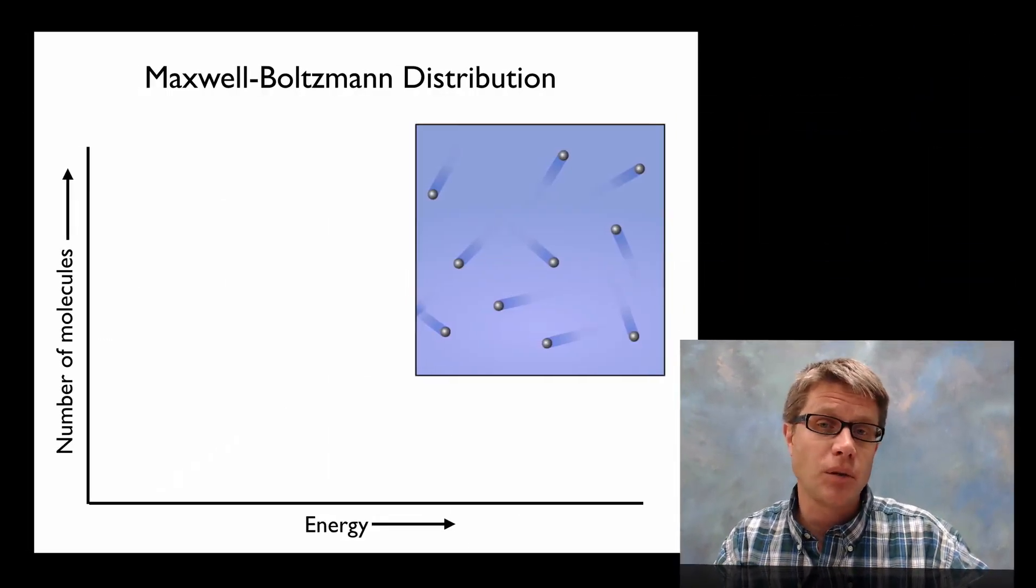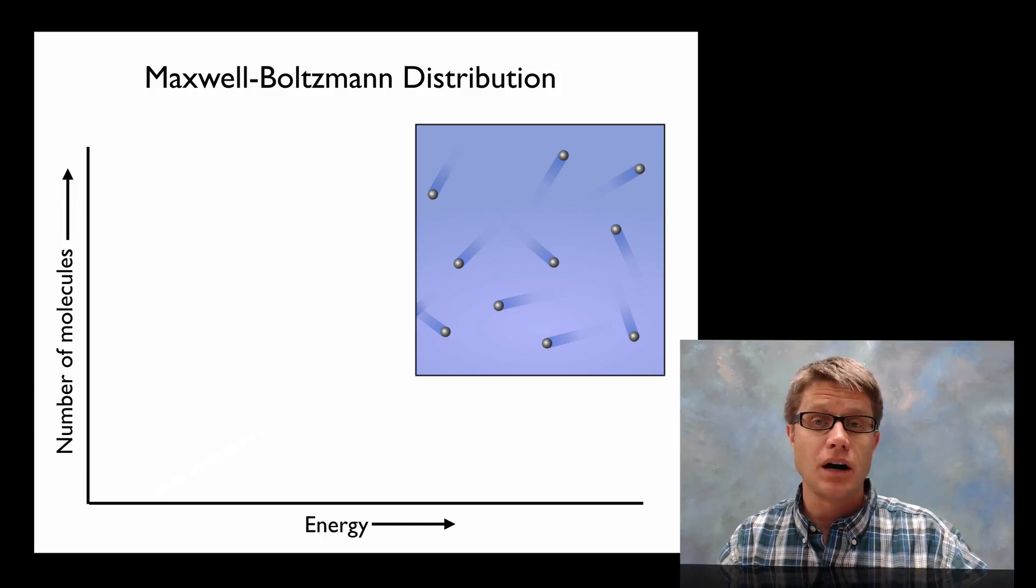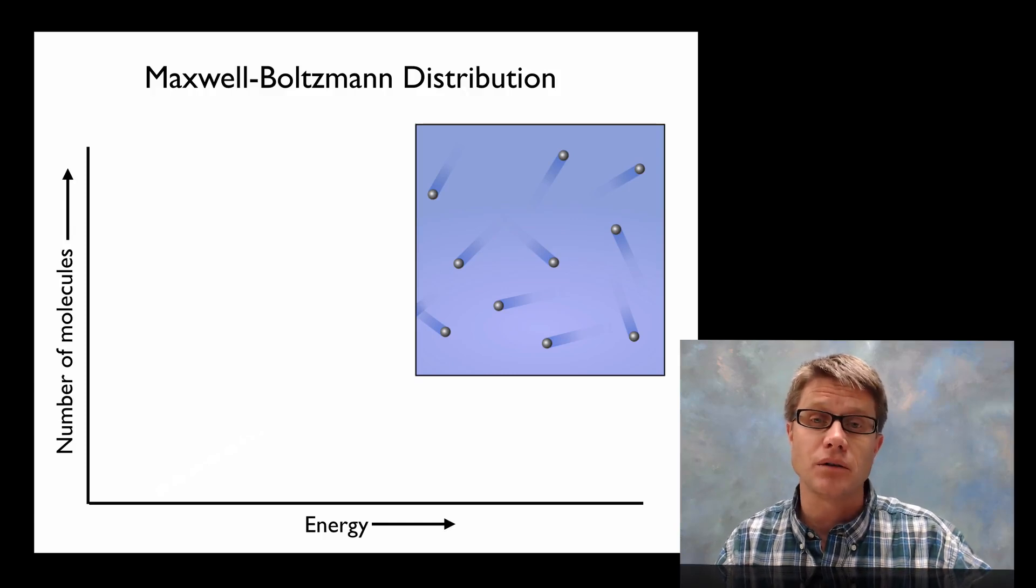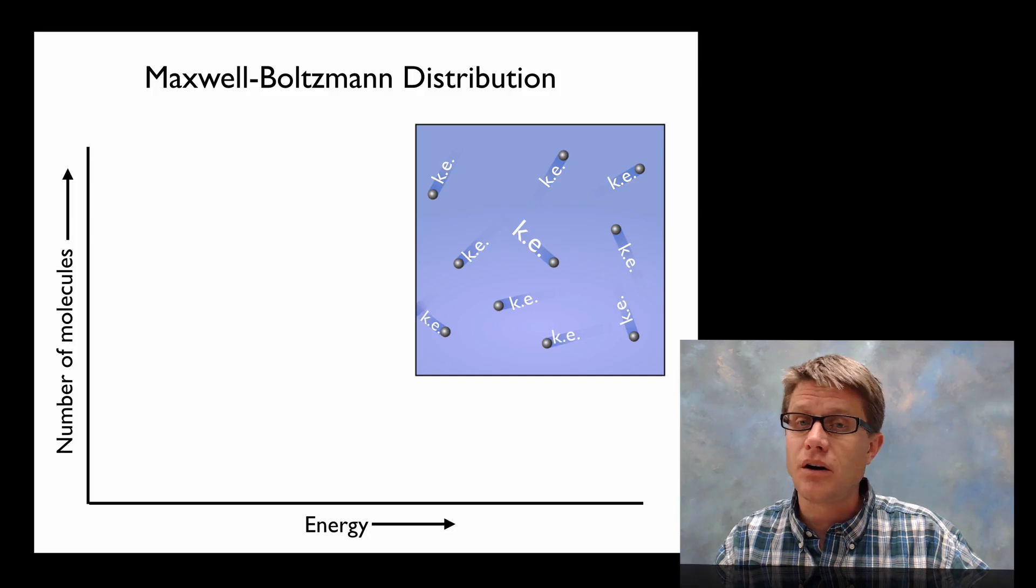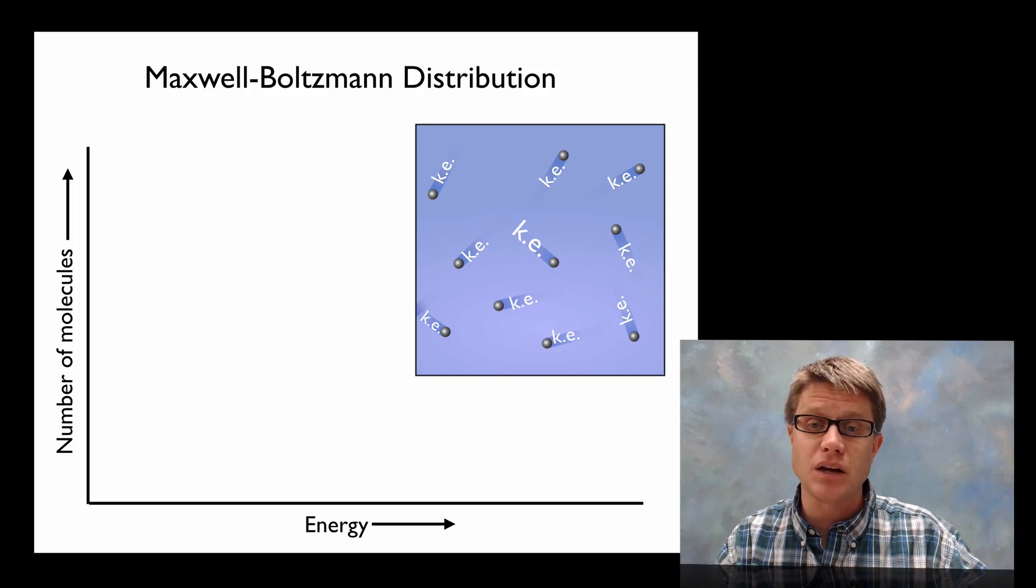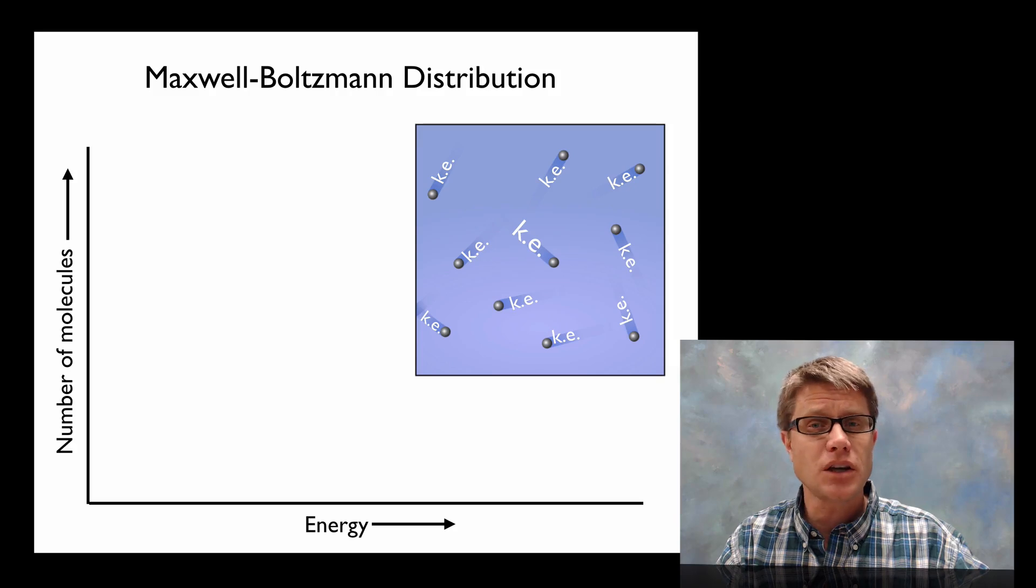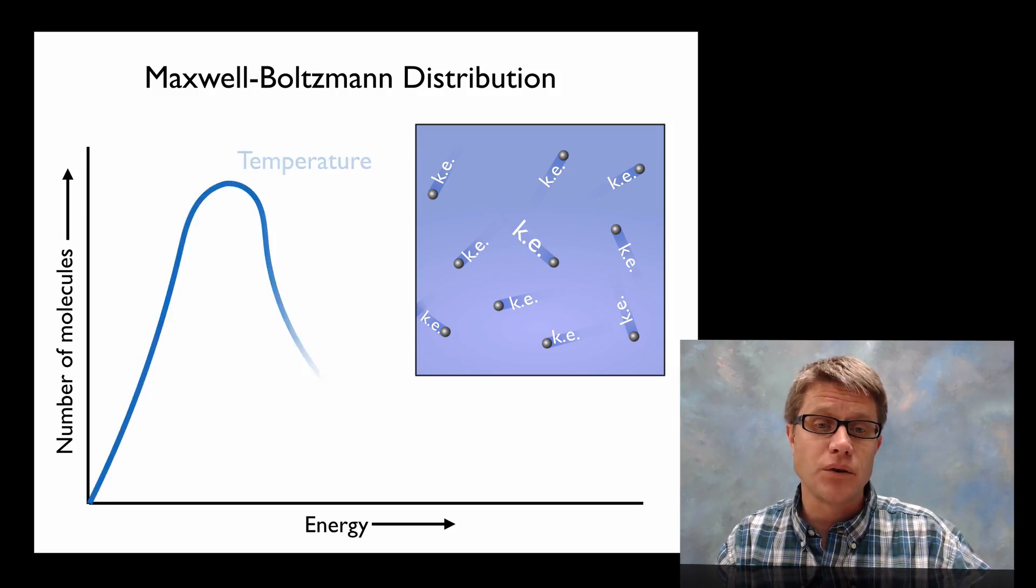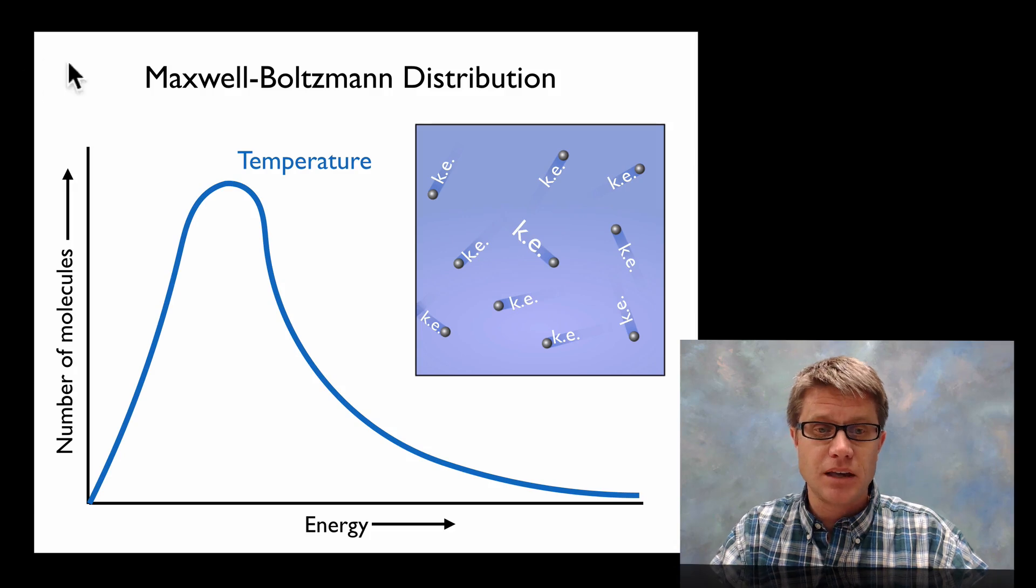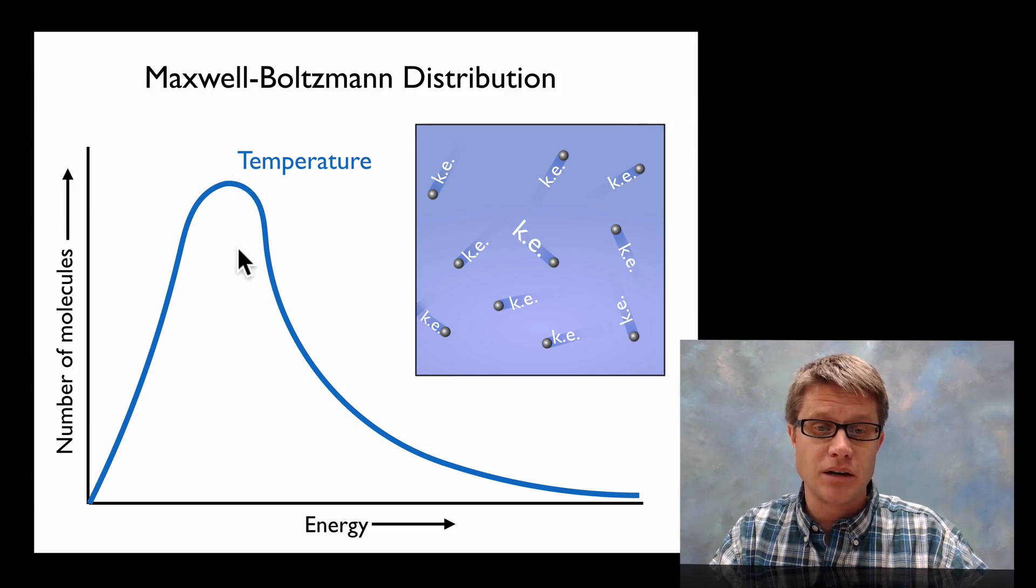And so the Maxwell-Boltzmann distribution really talks to the overall motion of all these different particles based on temperature. And so if we were to look at all these particles moving around or bouncing off one another, they're all going to have an average kinetic energy. But they're each going to have individual kinetic energies or speeds of their own. And so if we were to plot that out it would look something like this. So the average is going to be right here.